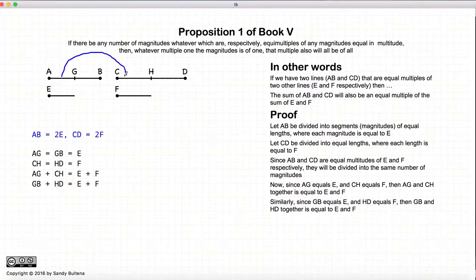This is almost the definition of equal multiple. And for each one of these, if we add them together, it will be equal to E plus F. So if we carry on, let's add these all together.